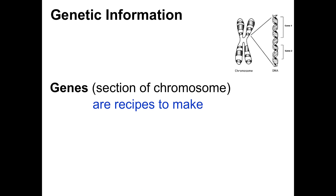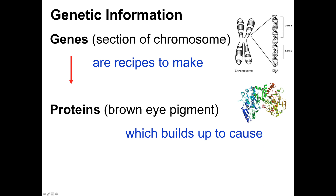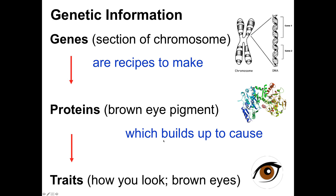Genetic information: we know that genes are sections of chromosomes, a long strand of DNA. Within that long strand there are several genes, each of which is a recipe to make a protein. Proteins accumulate in your body — for example, a brown protein called melanin can build up in your eye and lead to traits such as your eye color, your height, your bone structure, even your blood type. So genes produce proteins, which then result in you having physical characteristics.